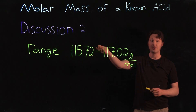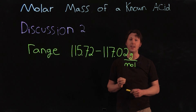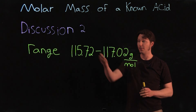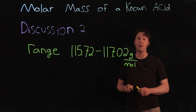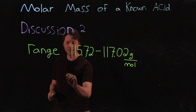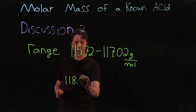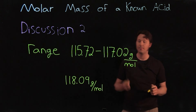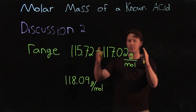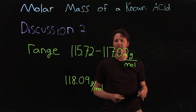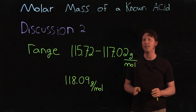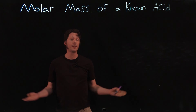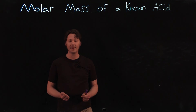The final question to cover is discussion number two, which asks you to compare the actual molar mass of the known acid to the molar mass you calculated. All you do is see whether the actual molar mass falls inside the range calculated previously. For instance, if your known acid was succinic acid with a molar mass of 118.09 grams per mole, that value falls slightly outside our calculated range, so we conclude the actual molar mass differs a bit from our result — though it is reasonably close. That's the post lab for chemistry 105 molar mass of a known acid.